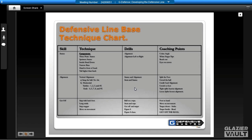If you look over at the skill on the far left, it says stance, then alignment, then get off. And in this area it defines the technique, then it talks about the drills that we use for that and what our coaching points are.